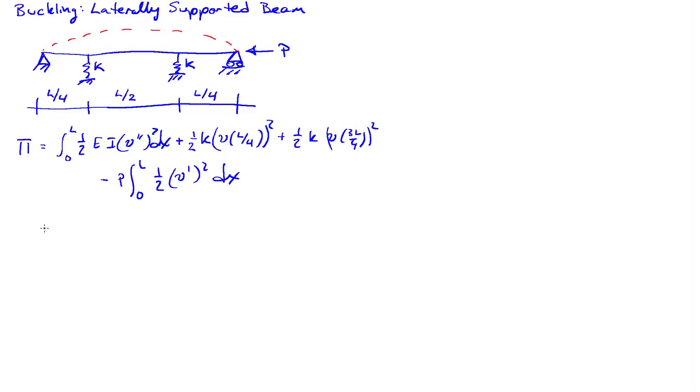What we're going to do is assume that we have a form for v. Let's use a cosine. We'll say v is some constant sine of pi x over 2, and we'll try and determine the value p at which the system will buckle approximately into this form.